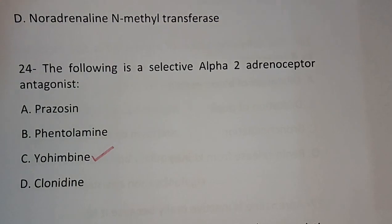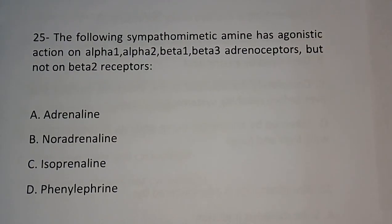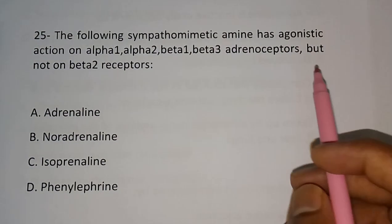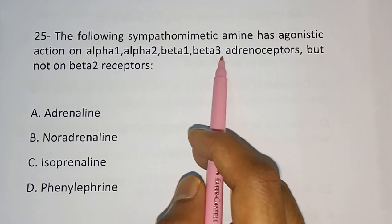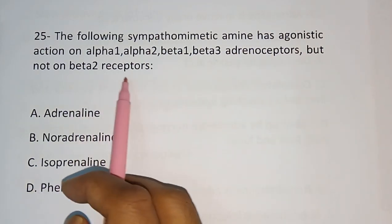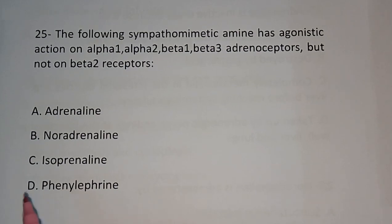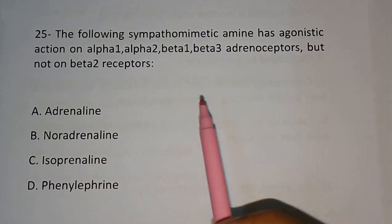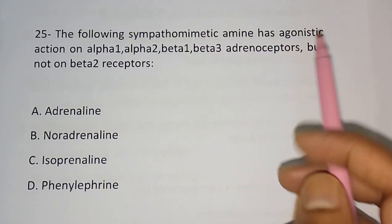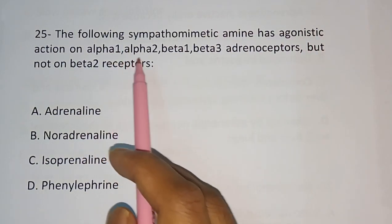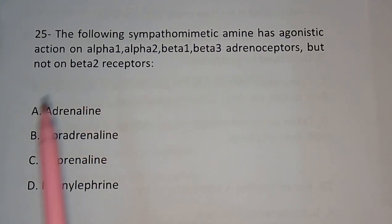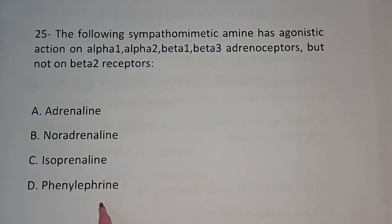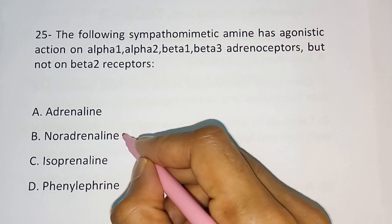Question number 25: The following sympathomimetic amine has agonistic action on alpha-1, alpha-2, beta-1, and beta-3 adrenoceptors, but not on beta-2 receptor. Options are: Adrenaline, Noradrenaline, Isoprenaline, Phenylephrine. The correct answer is: Noradrenaline.